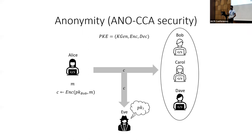Anonymity roughly guarantees that the ciphertext does not leak the public key which was used to encrypt the corresponding message. For example, if Alice wants to send a message m to Bob and she wants to hide the fact that she's communicating with Bob from other third parties like Eve, what she does is encrypt the message under Bob's public key and then broadcast the ciphertext to a subset of users including Bob, such that Eve cannot figure out who was the intended receiver — that is, which public key was used.